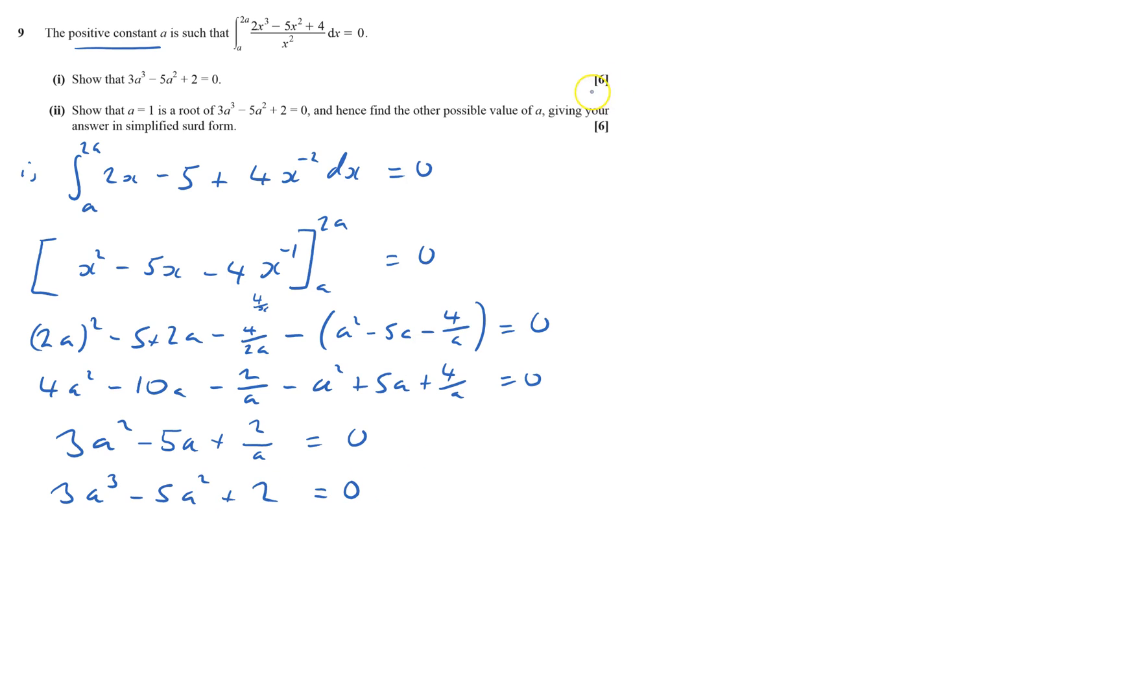And that's what they wanted. Now I've got to do part 2, and show that a equals 1 is the root, so I just need to put in a equals 1 into that expression, and that'll give me 3 times 1 cubed is 3, minus 5 times 1 squared is 1, plus 2 equals 0, therefore a equals 1 is a root, and therefore a minus 1 is a factor.